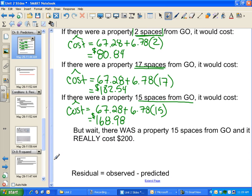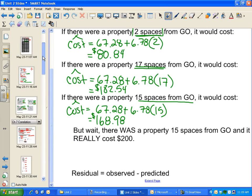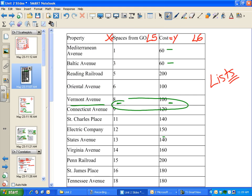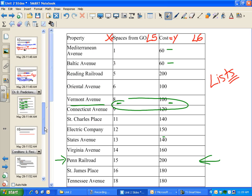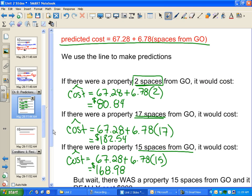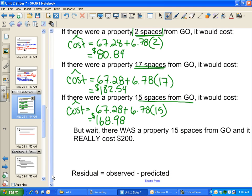Here's something interesting. There actually was a property 15 spaces from GO. If I go back to the data set—15 spaces was Penn Railroad—it costs $200. But wait, I thought it would cost $168.98. So there's a difference between my prediction and what actually happened.